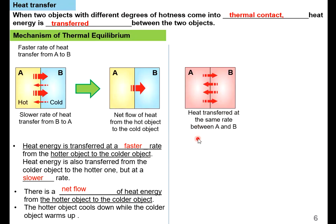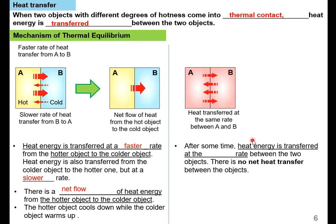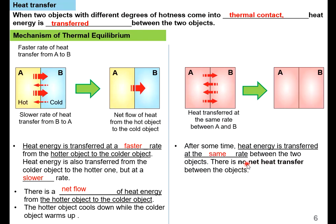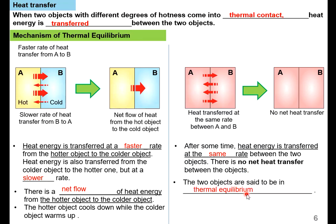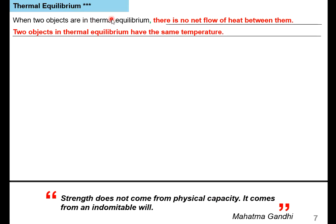After a certain period of time, heat transfer occurs at the same rate between A and B. When they transfer at the same rate — for example, A transfers 60 joules to B and B transfers 60 joules to A — there is no net heat transfer between the two objects. At this point, the objects are considered to be in thermal equilibrium. Thermal equilibrium has two conditions: first, no net heat transfer between the two objects; second, at the final state, both objects have the same temperature.